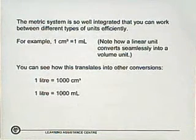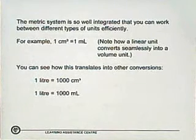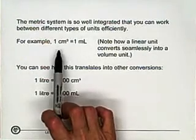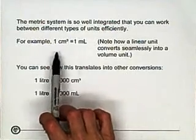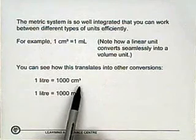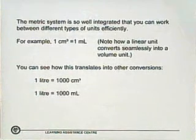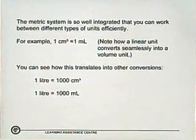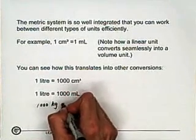Just for your interest, the metric system is so well integrated that you can work between different types of units efficiently. For example, one centimeter cubed is equal to one milliliter. You're converting a linear unit to a volume unit, and it's seamless. It's an exact equivalency. It translates into other conversions. One liter is exactly equal to a thousand centimeters cubed, or a thousand milliliters. The same is true with kilograms and tons. A thousand kilograms is equal to one metric ton.